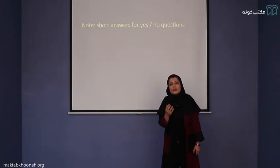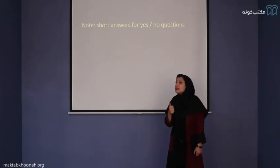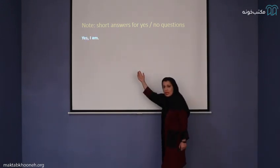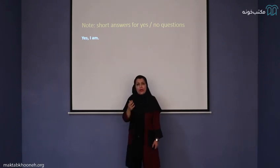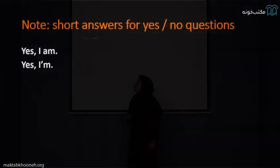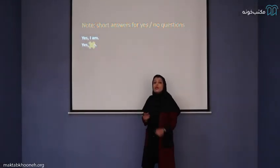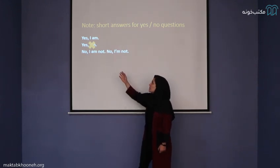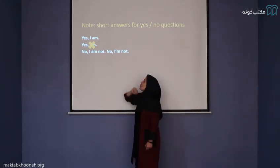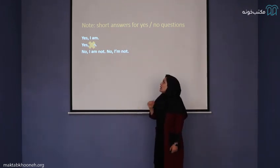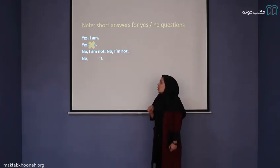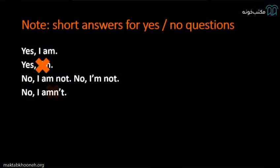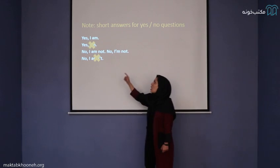For short answers — for example, when I say are you married, your answer is either yes or no. If the answer is yes, you say: yes, I am. We cannot say 'yes, I'm' — that is completely wrong. If the answer is no, we say: no, I am not, or no, I'm not. We never say 'no, I am' — that is also wrong.